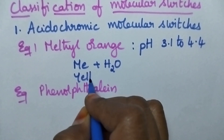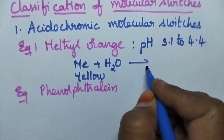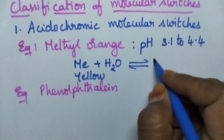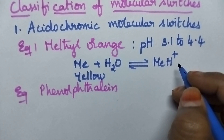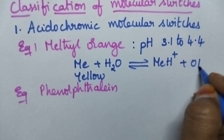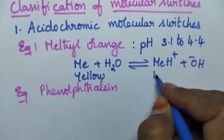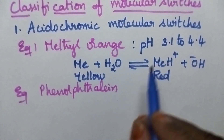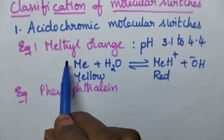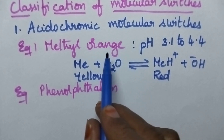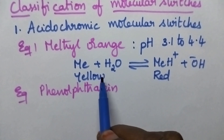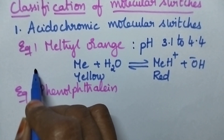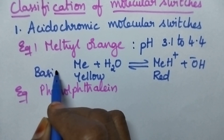The structure of methyl orange in basic medium is denoted as Me, and it exhibits yellow color. Under acidic conditions, it modifies its structure to MeH⁺, and hence it appears in red color. So depending upon the pH value, methyl orange is capable of modifying its structure, and hence the color of methyl orange varies from yellow to red going from basic medium to acidic medium.